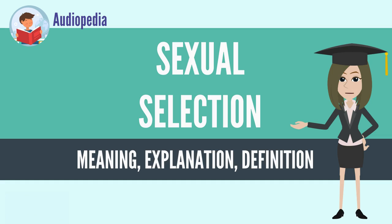This is caused by a positive feedback mechanism known as a Fisherian runaway, where the passing on of the desire for a trait in one sex is as important as having the trait in the other sex in producing the runaway effect. Although the sexy son hypothesis indicates that females would prefer male offspring, Fisher's principle explains why the sex ratio is 1:1 almost without exception.